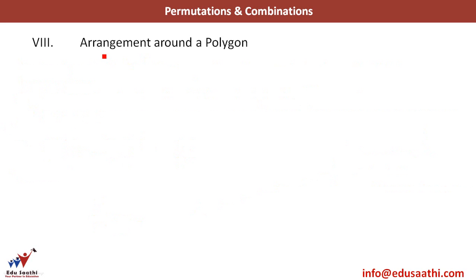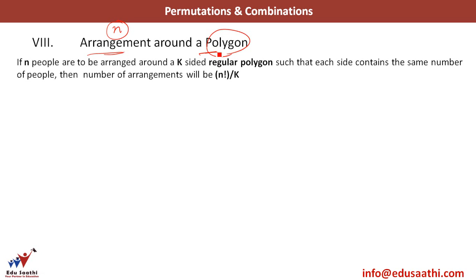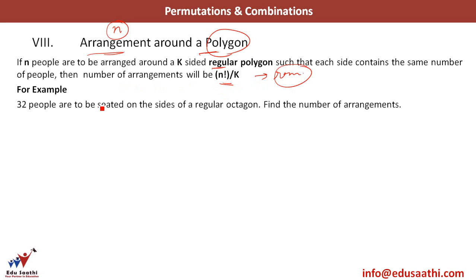The next topic is arranging n people around a polygon. If n people are to be arranged around a k-sided regular polygon such that each side contains the same number of people, then the number of arrangements is given by n factorial divided by k. You just need to remember this formula. For example, 32 people are to be seated on the sides of a regular octagon — find the number of arrangements. The assumption is equal people on each side; otherwise this formula is not valid. The answer is 32 factorial divided by 8, where 8 is k (the number of sides of an octagon) and 32 is n.